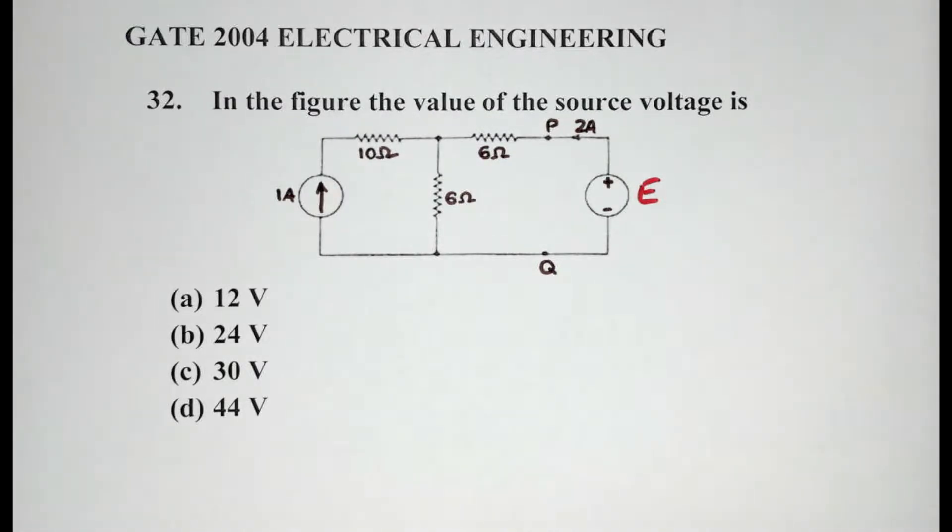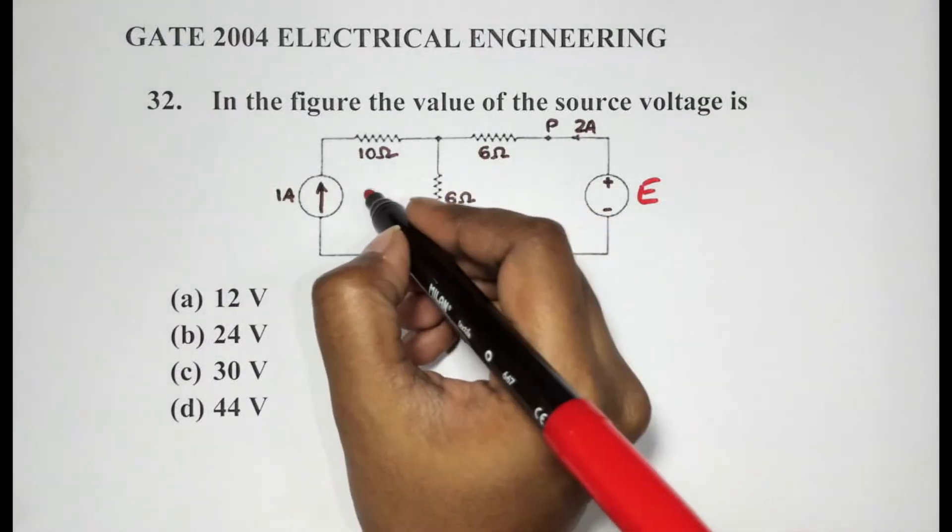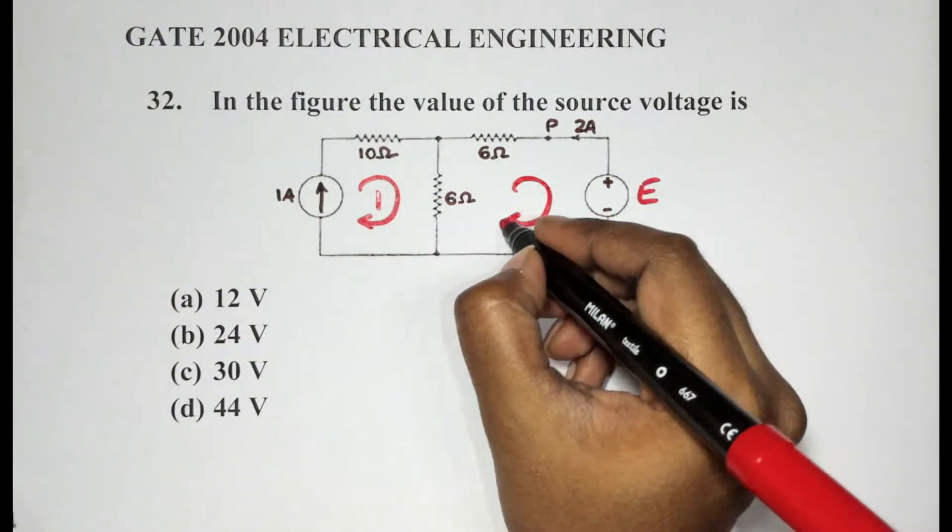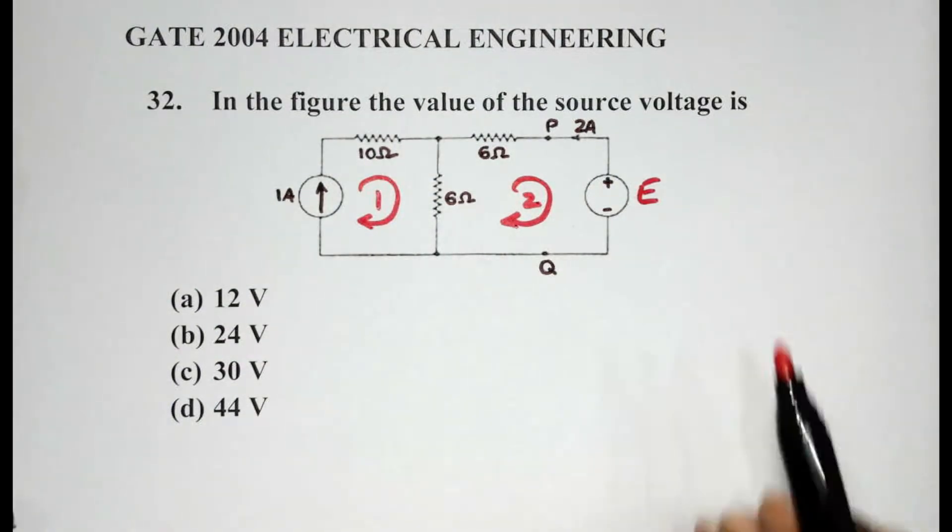So our options are 12V, 24V, 30V, and 44V. To solve this, let's consider applying KVL to both these loops over here. We'll call this as loop 1 and we'll call this as loop 2.